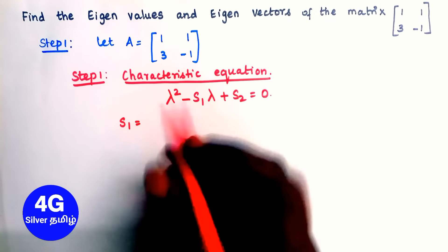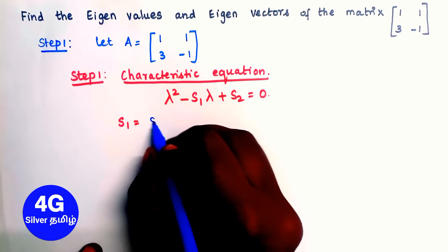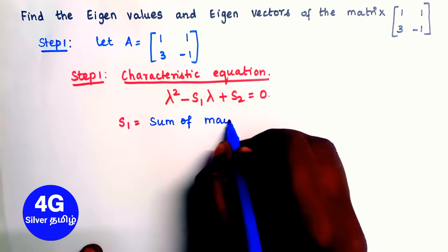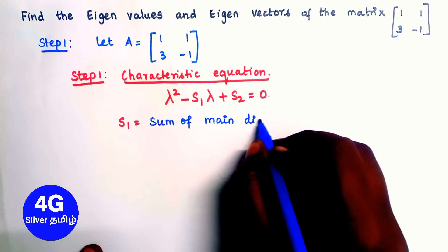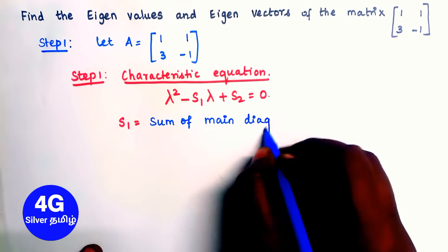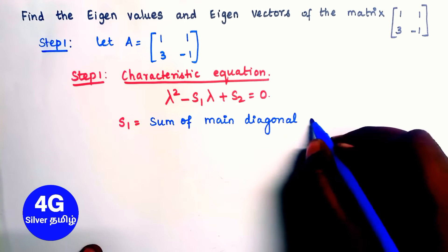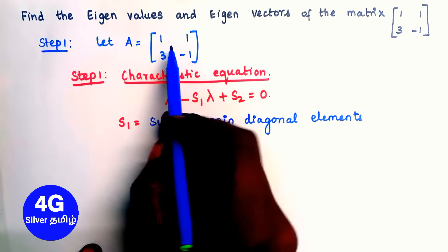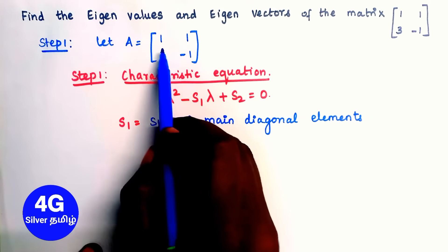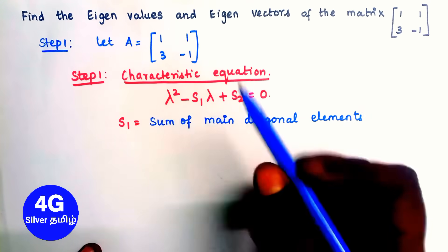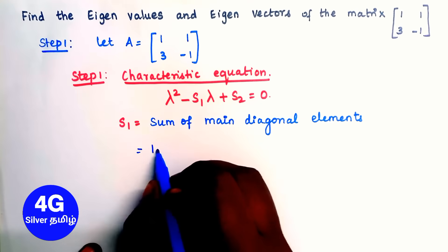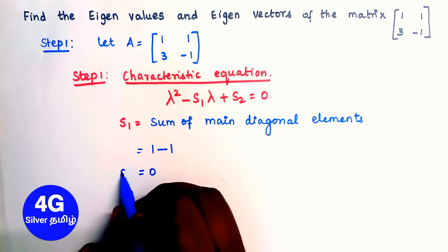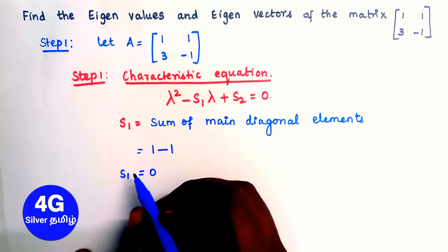S1 is the sum of the main diagonal elements. In the matrix, the main diagonal elements are 1 and -1. So 1 plus (-1) equals 0. Therefore S1 equals 0.